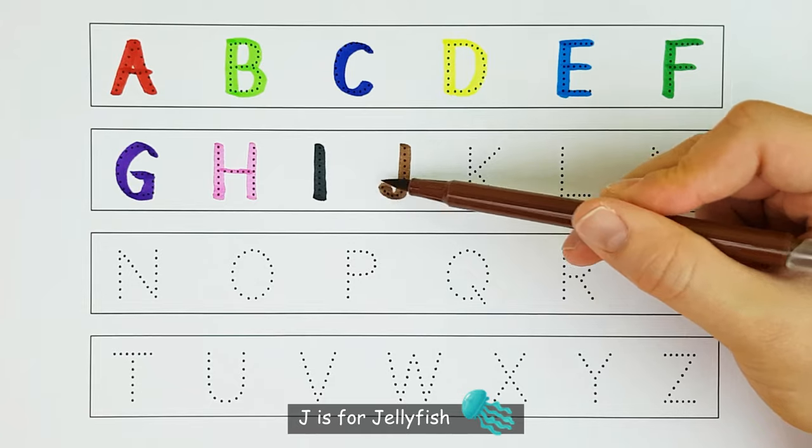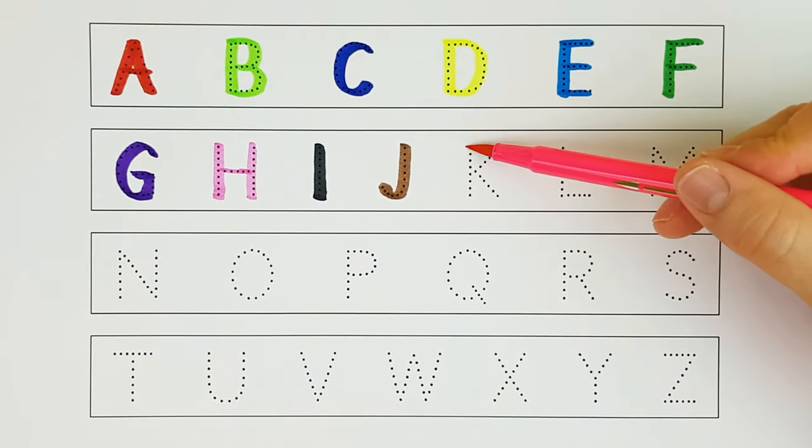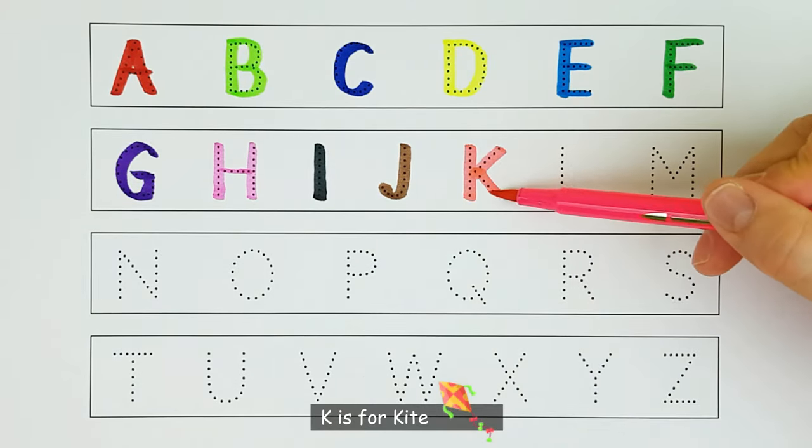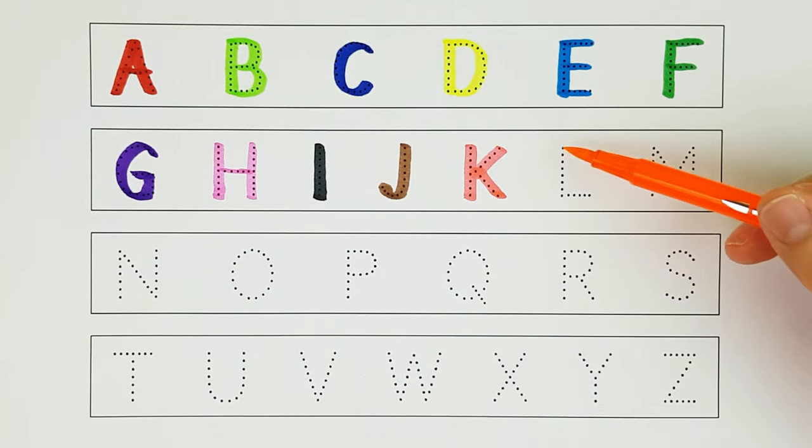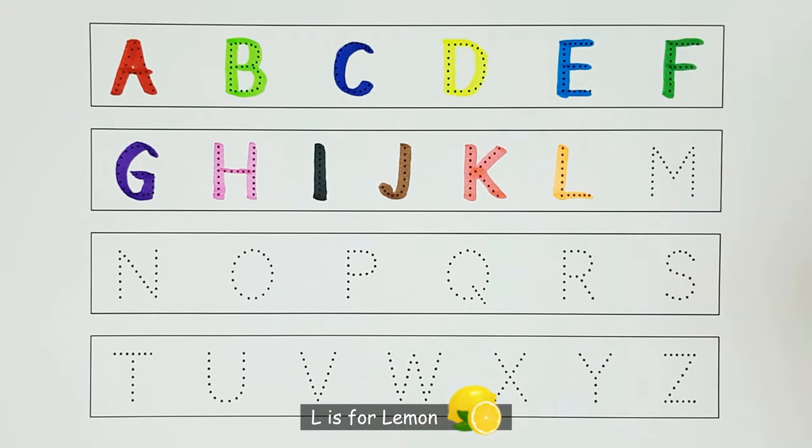J. J is for Jellyfish. J. K. K is for Kite. K. L. L is for Lemon. L.